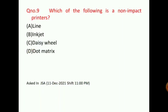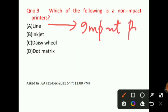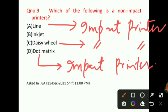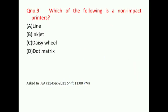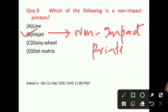Let's talk about question number 9: Which of the following is a non-impact printer? Line printer is an impact printer. Daisy wheel is an impact printer. Dot matrix is also an impact printer. So the correct answer for question number 9 will be option B, that is, inkjet. Inkjet is a non-impact printer. This was also asked in a JSA paper.